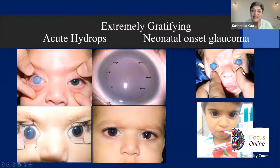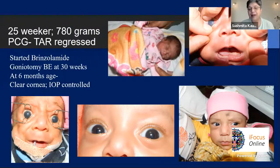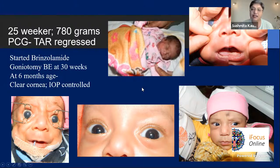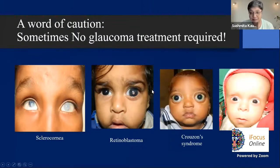One particularly gratifying case is a Haab's stria that had stretched — the cornea becomes white acutely, the mother rushes to emergency, but within two months it clears with no surgery needed. Neonatal onset glaucoma can present as early as 16 hours after birth — one such patient came to us that early and is now a naughty three-year-old. Don't think preterm babies only have ROP — they can have glaucoma too. A 25-week gestation, 780-gram baby had temporal avascular retina and trabecular dysgenesis; we now do goniotomy at six months corrected age with good outcomes.